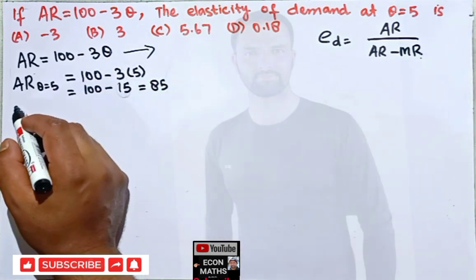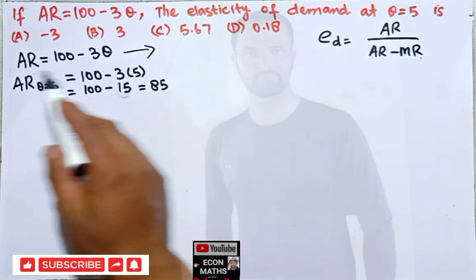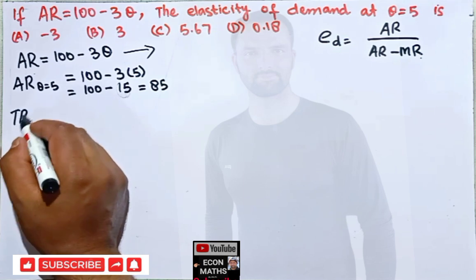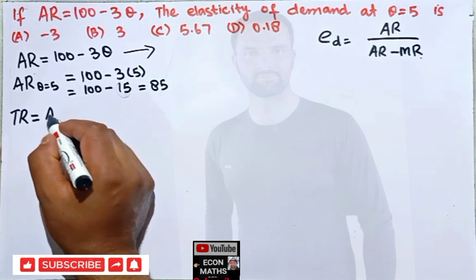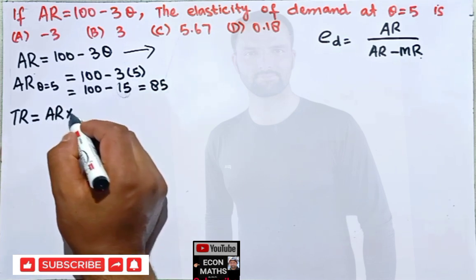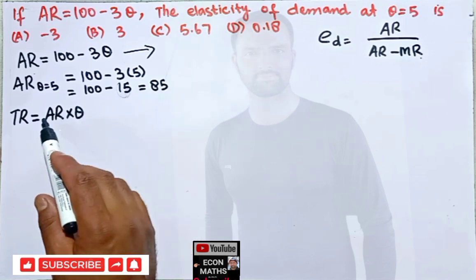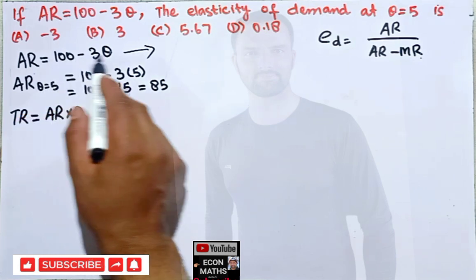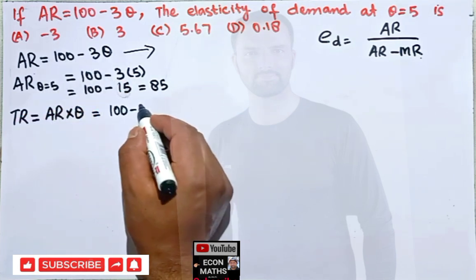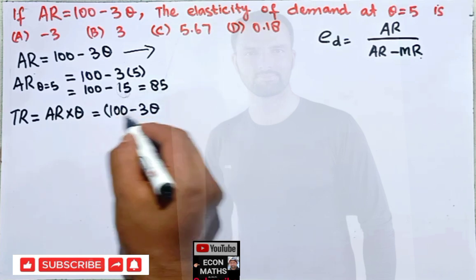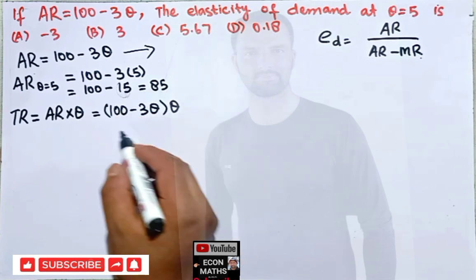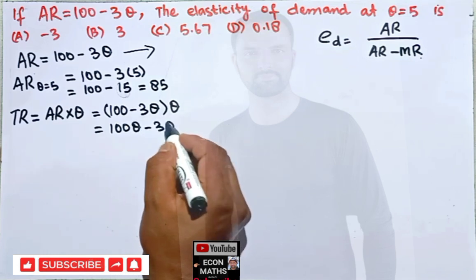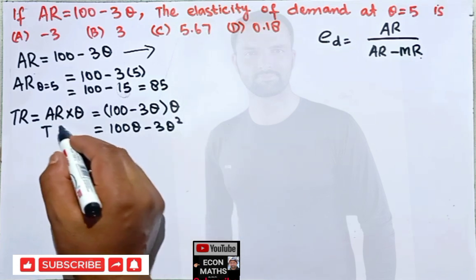Now we need to find the marginal revenue. To do so, we first find total revenue. Total revenue equals average revenue times quantity. Our average revenue function is 100 minus 3Q, and multiplying by Q gives us total revenue equal to 100Q minus 3Q squared.